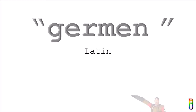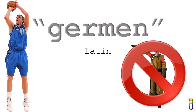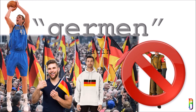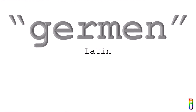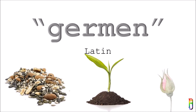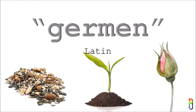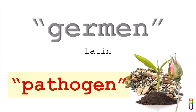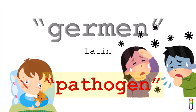The word 'germ' came from the Latin word 'germen' — not German, it's spelled G-E-R-M-E-N. 'Germen' translates to a seed, a sprout, or a bud. But in the world of biology, a germ is most commonly known as a pathogen, which means it is anything that can cause a disease.